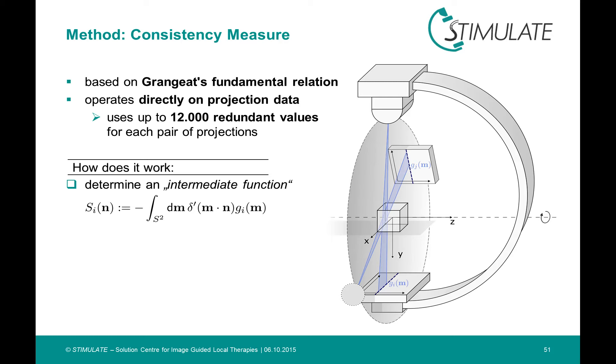This is nothing but integrals over 2D planes through the object. If we assume a static object, its 3D radon transform should not change, since integrals over a function cannot change if the function does not change, and as a consequence the intermediate function should be n invariant.